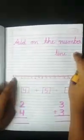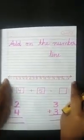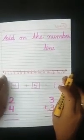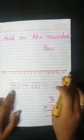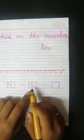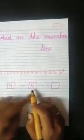Now here is one more method to do addition — add on a number line. I draw a line and write some digits: zero, one, two, three, four, and so on. We will do addition with the help of this number line. The numbers we are adding are four and five.